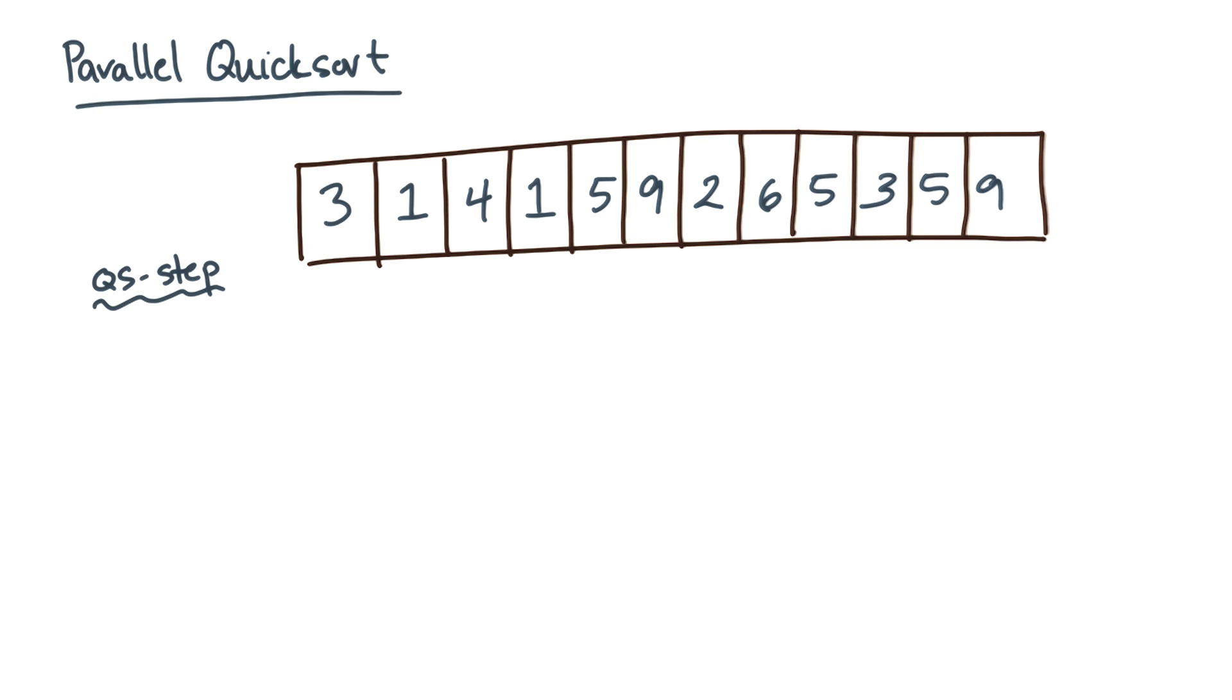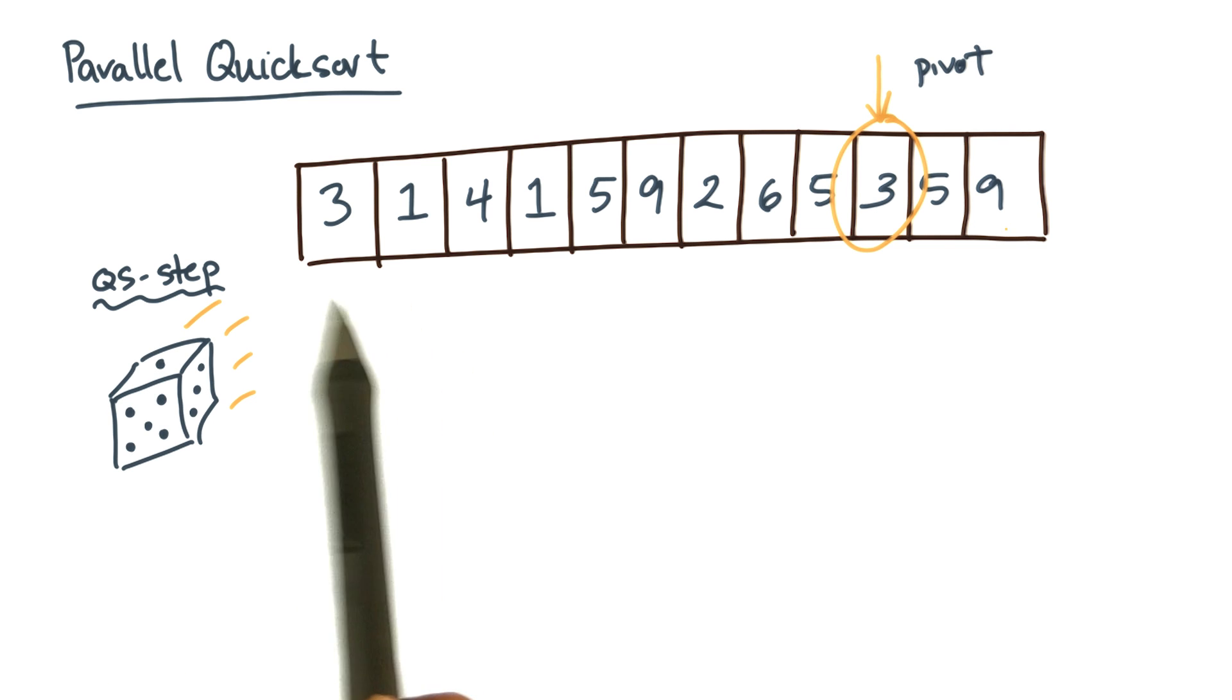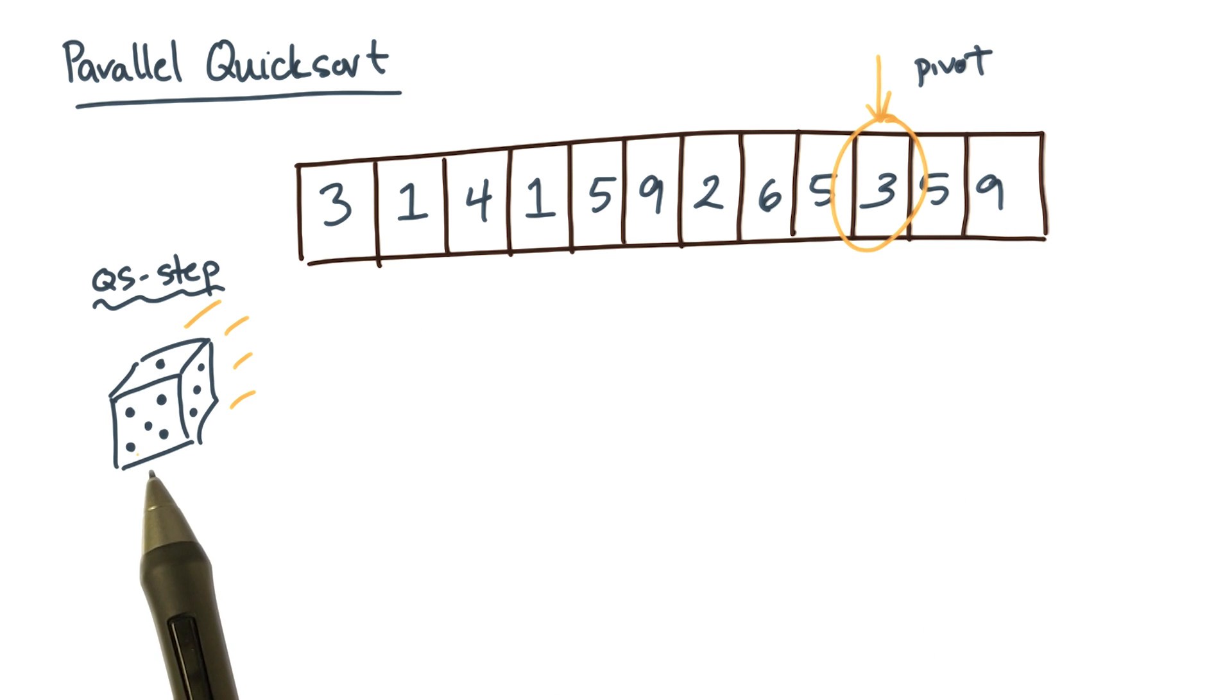The first part of a quicksort step is choosing a pivot element. Now, any element can work, but a good choice is to select one uniformly at random. So for this 12 element array, you might roll a 12-sided die and pick this element.